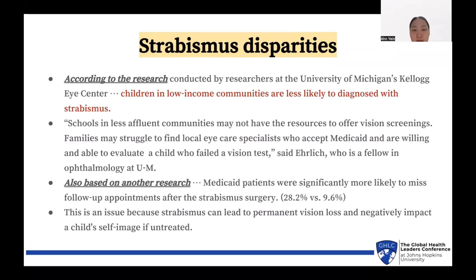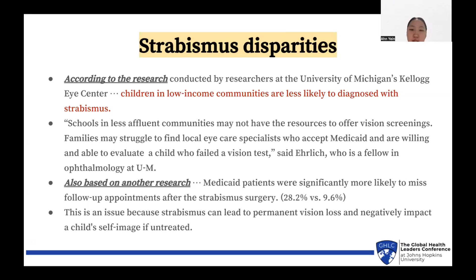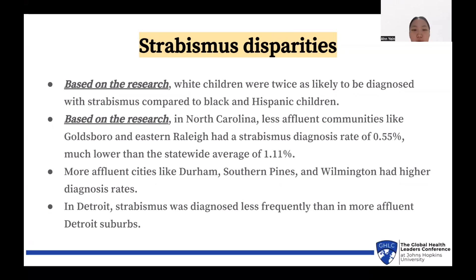Research conducted by the University of Michigan's Kellogg Eye Center highlights disparities in the diagnosis and treatment of Strabismus. Children in low-income communities are less likely to be diagnosed. Additionally, Medicaid patients are significantly more likely to miss follow-up appointments after Strabismus surgery at 28.2%, compared to only 9.6% of patients with private insurance. This is critical because untreated Strabismus can lead to permanent vision loss and negatively impact a child's self-image. Furthermore, white children were twice as likely to be diagnosed compared to Black and Hispanic children.